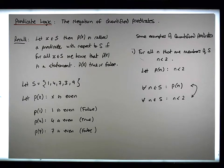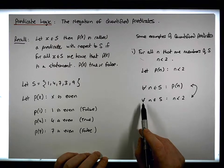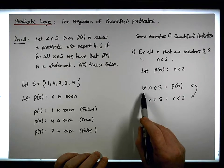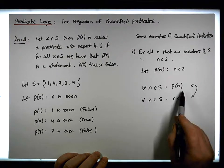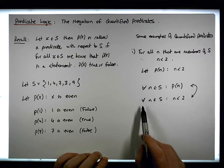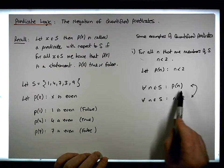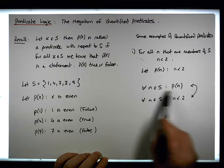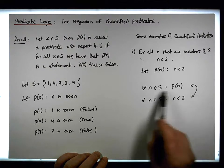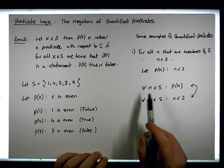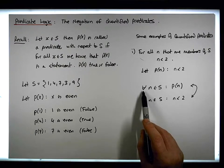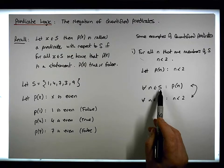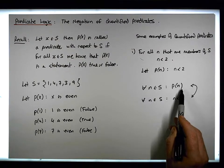We're interested in the negation. We can see that when it comes to the evaluation of this particular quantified predicate, it's either true or false. So this is saying: for all n that are elements of s, P of n must be true.